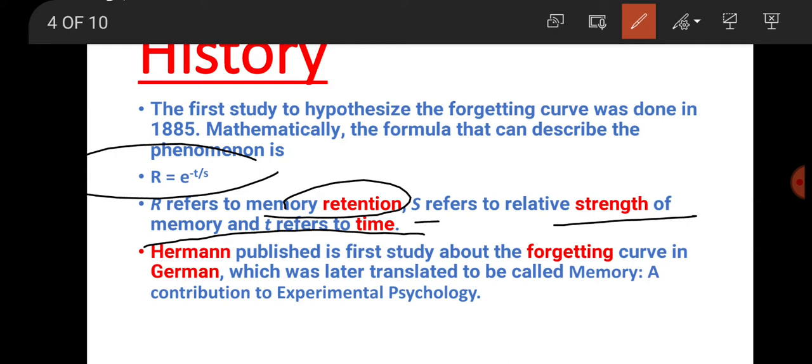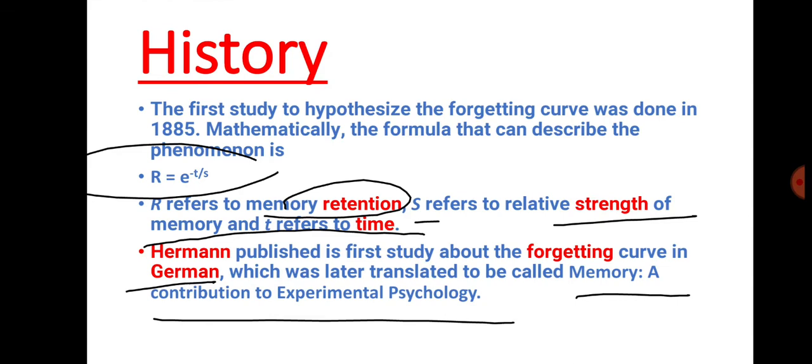Herman published his first study about the forgetting curve in German, and later on it was translated to be called Memory: A Contribution to Experimental Psychology. Later on, it was published in other languages.